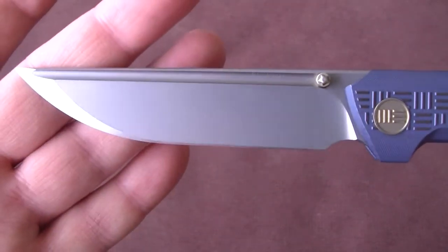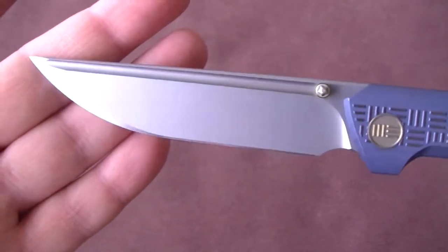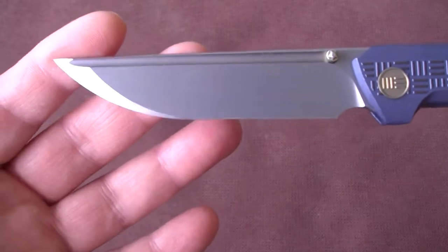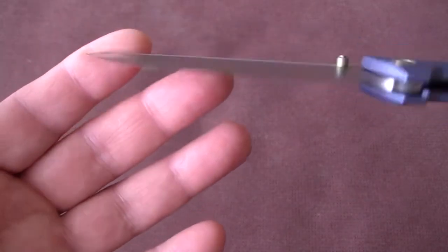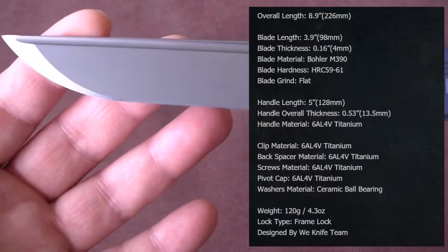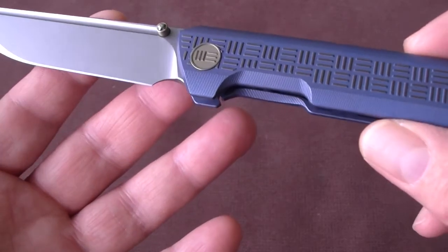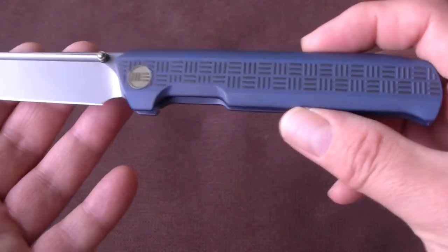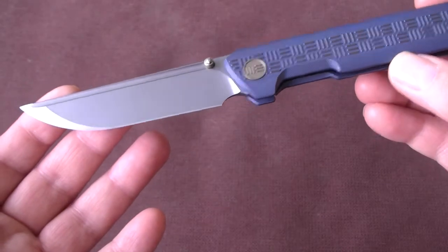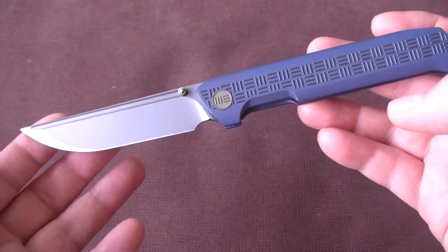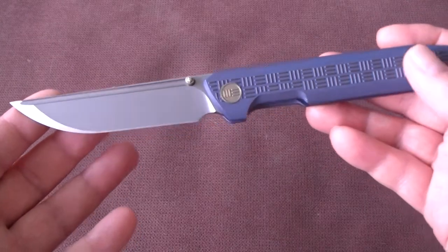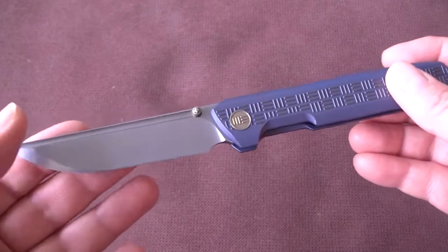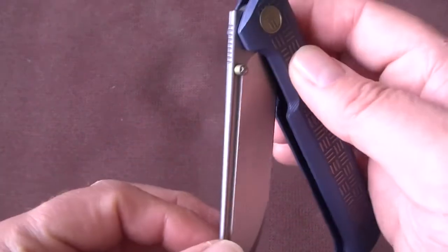This is an in-house design, M390 blade steel. It is a big knife. The blade measures 3.9 inch or 9.8 cm. The handle measures 5 inch or 12.8 cm, and the overall length is 8.9 inch or 22.6 cm. And despite the length of the knife, it only weighs 4.3 oz or 120 gram.